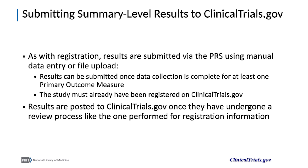As with registration, results are manually entered or uploaded into the PRS database for eventual posting to clinicaltrials.gov. Results can be submitted once data collection has completed for at least one primary outcome measure and for records that have been previously registered on clinicaltrials.gov. Results are posted once they have undergone a review process like the one performed for registration information, meaning they must pass an automated system validation process and quality assurance review by clinicaltrials.gov staff.